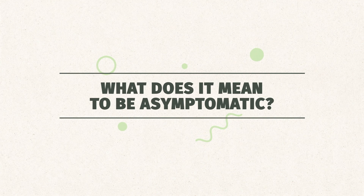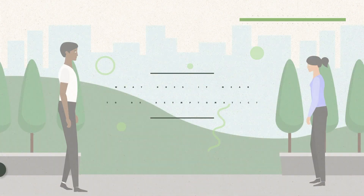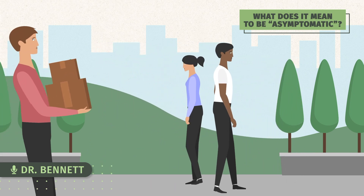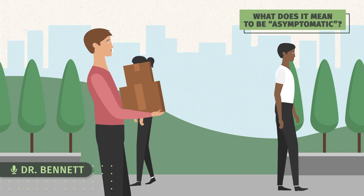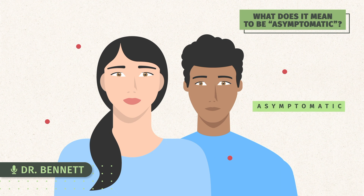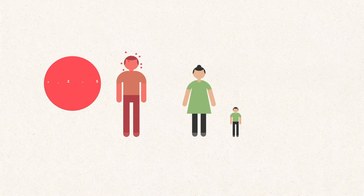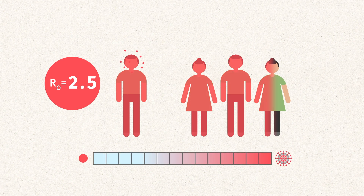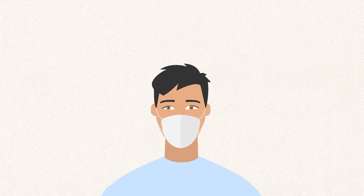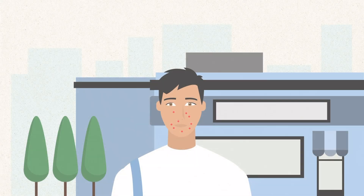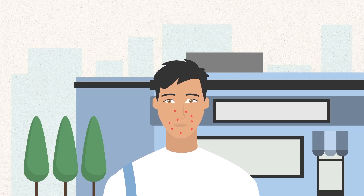What does it mean to be asymptomatic? What's very tricky about this virus is that many people don't develop symptoms, or if they do, they're very mild and may even go unnoticed. We call those infections asymptomatic. SARS-CoV-2 has a high reproductive number and a long incubation period. Even if you do not feel sick, you may still be able to transmit the virus to other people during the incubation period or as an asymptomatic carrier of the virus.